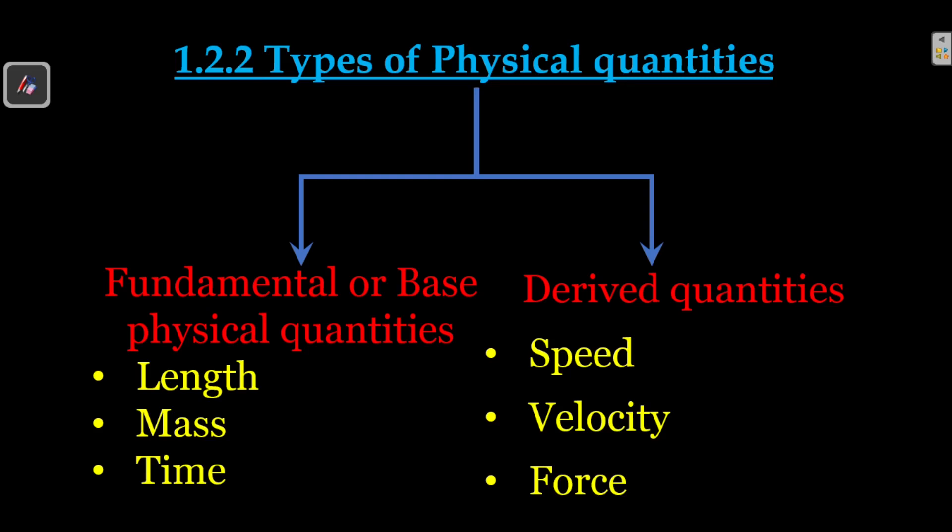In the textbook there are seven fundamental quantities: length, mass, time, electric current, thermodynamic temperature, amount of substance, and luminous intensity. Along with these seven, there are also two supplementary quantities: plane angle and solid angle.